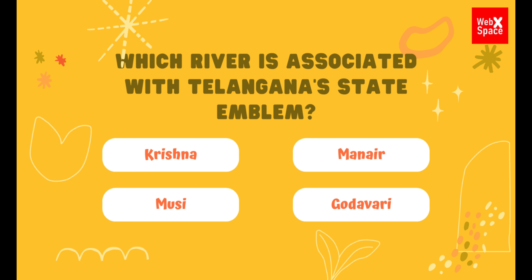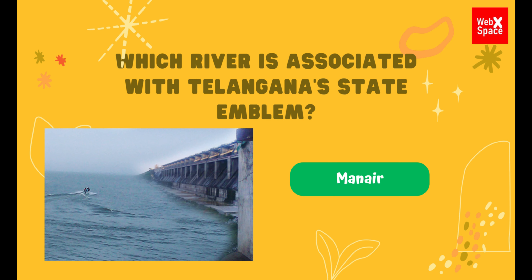Which river is associated with the Telangana state emblem? Krishna, Maner, Musi, Godavari. The correct answer is Maner.